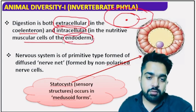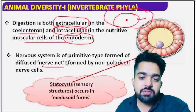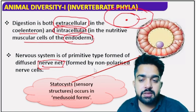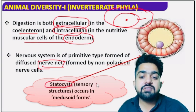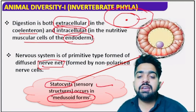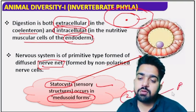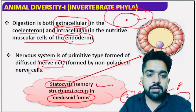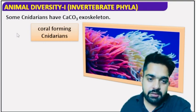The nervous system is of a primitive type, formed of a diffused nerve net — meaning a well-developed nervous system is not present; instead, a diffused type is present in which networks of nerve-like structures are present. Statocysts are sensory structures found in the medusoid form. In Cnidaria, there are two forms — polyp and medusa — and statocysts are present inside medusa.